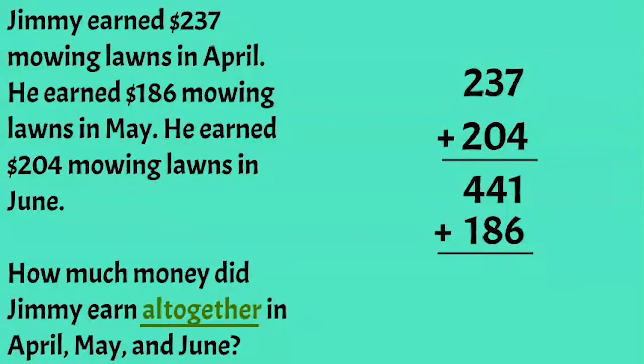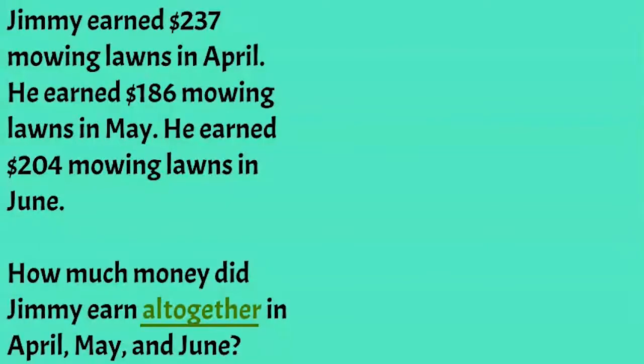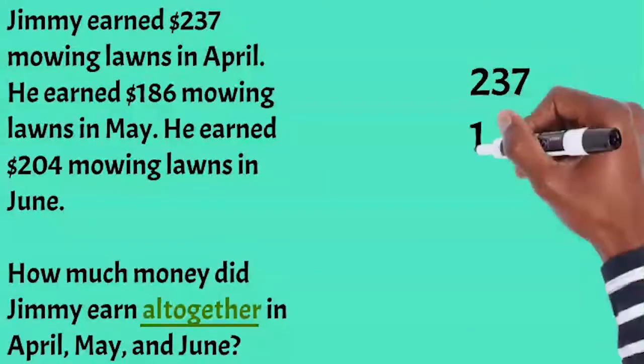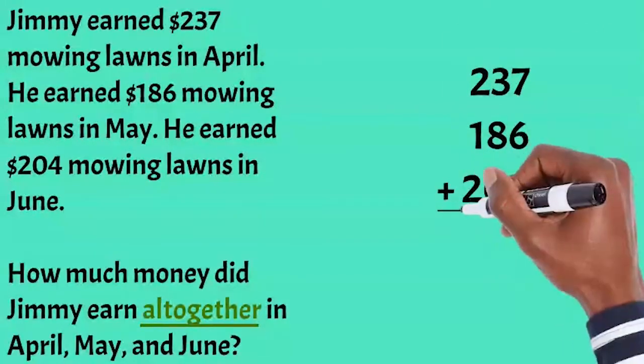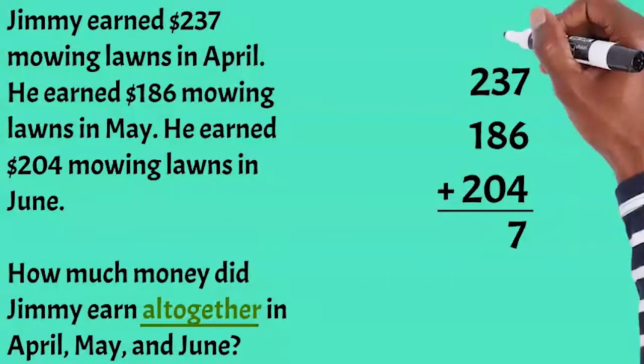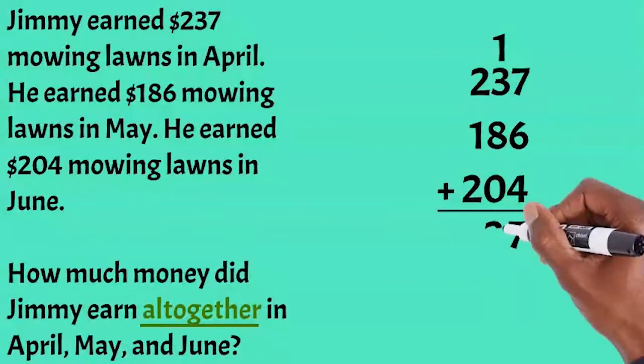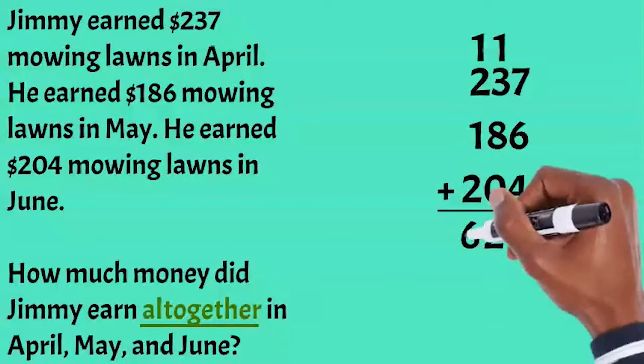One special thing about addition is that you can add more than two numbers at the same time. So let's try it. Add the digits in the ones place, the tens place, then the hundreds place. Don't forget to carry over any extra.